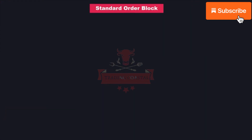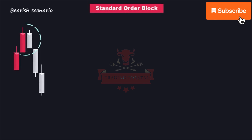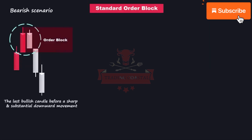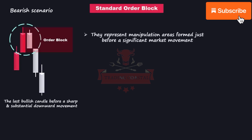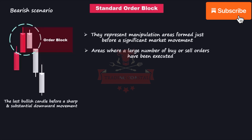The first type is the standard order block. In a bearish scenario, the standard order block refers to the zone corresponding to the last bullish candle before a sharp and substantial downward movement. The theory behind considering these zones as potential reversal areas is based on the belief that they represent manipulation areas formed just before a significant market movement. Traders view these zones as areas where a large number of buy or sell orders have been executed. Therefore, by using these zones in our trading strategy, we can potentially take advantage of the high probability of price reversal when it reaches these areas.